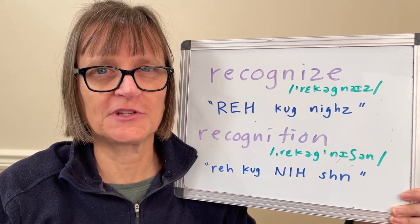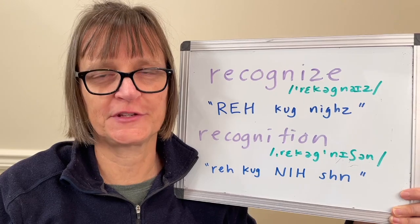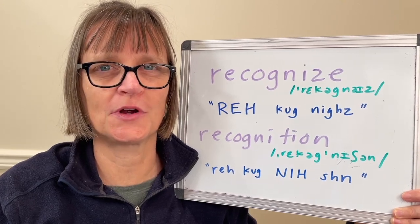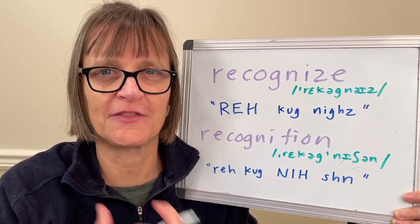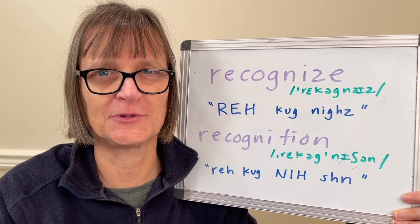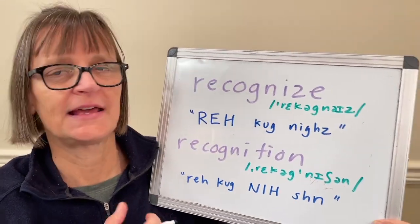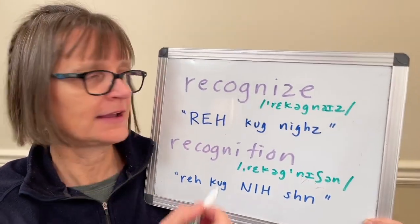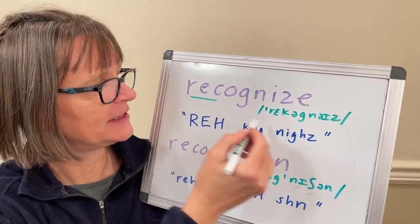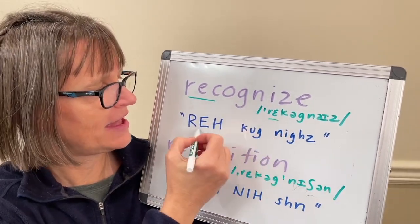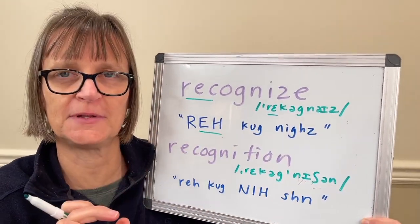These words are related but they have different syllable stress, which means your vowel sounds may change and the length of syllables may change. In 'recognize' we stress on the first syllable — we have the clear 'eh' vowel and that's the syllable that's going to be longer.